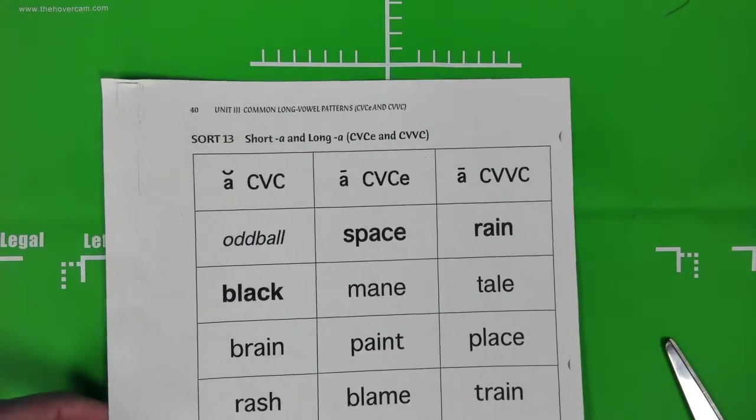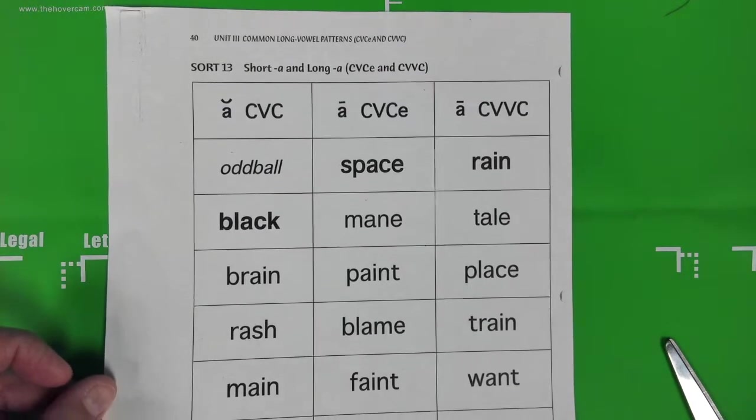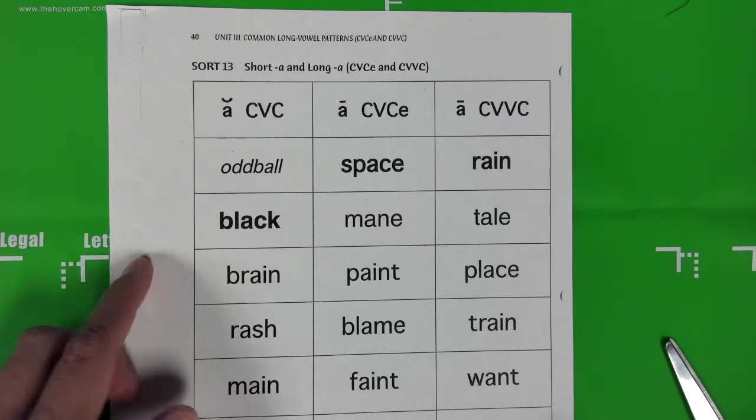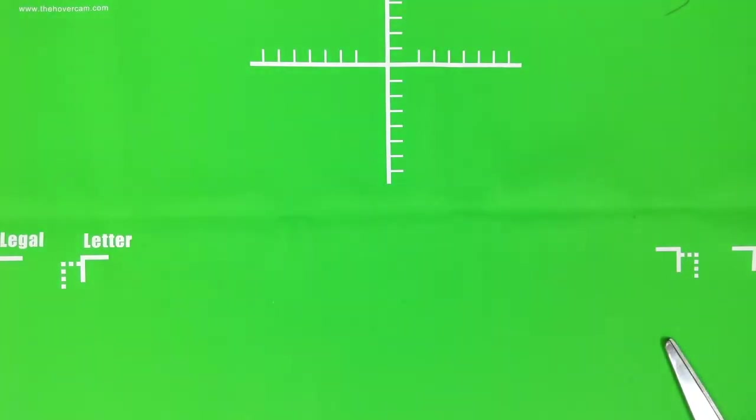What I want you to do right now is to pause the video and I want you to cut out all of your words. When you're done with that, please push play again. Now you have cut out all of your words. I would like you to put your anchor words up at the top.